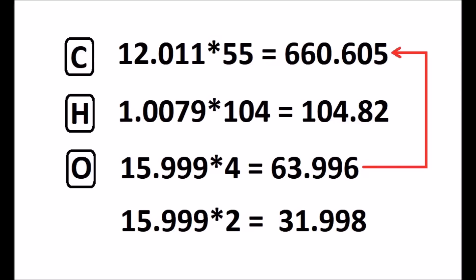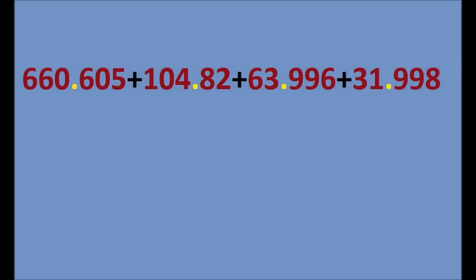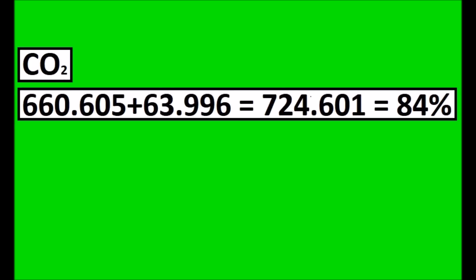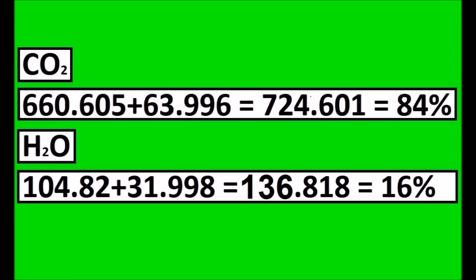So totaling it out will give us the weight of that molecule in atomic units. That will be 660.605 plus 104.82 plus 63.998 plus 31.998. That will be 861.421. Now we can calculate how much of this will become CO2 and how much will become H2O. For CO2, we will have 660.605 plus 63.998. These carbon and four oxygen atoms will go and form CO2. And hydrogen 104.82 and two oxygen atoms 31.998 will go and form H2O. So calculating their percentage, it will give us...